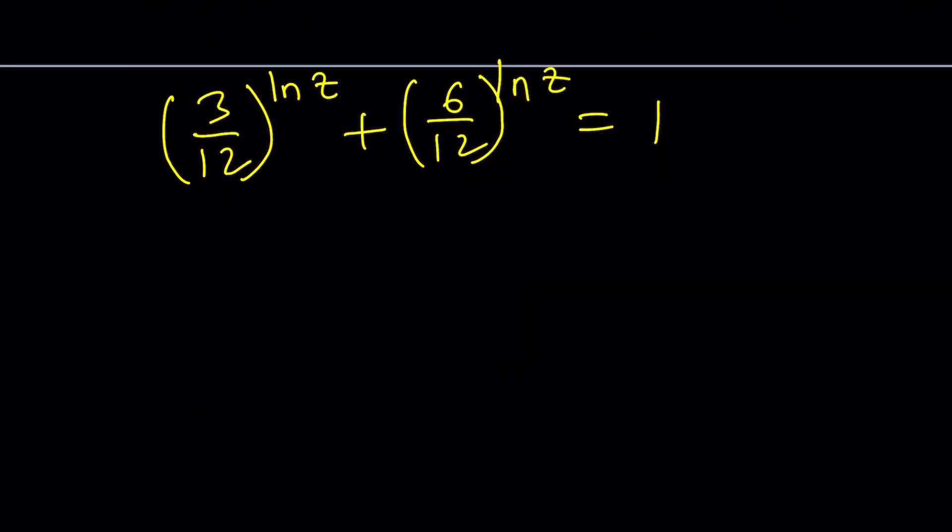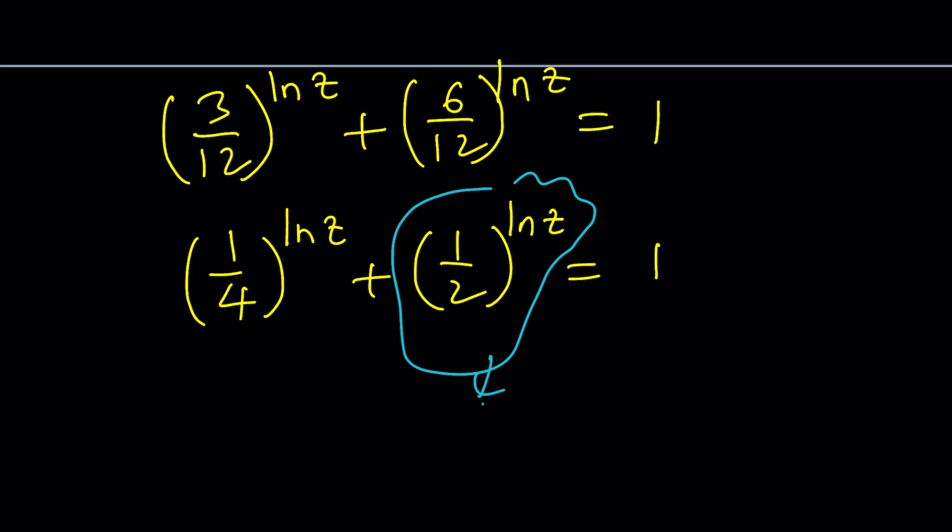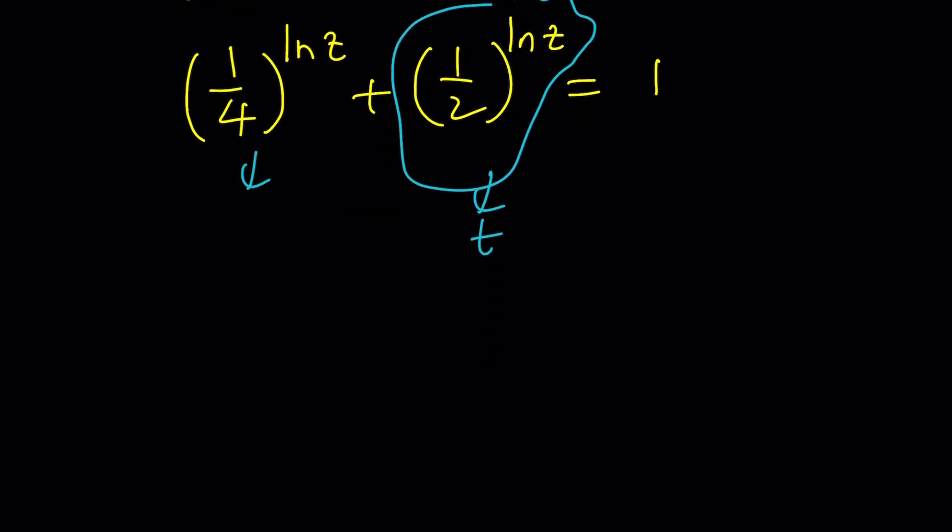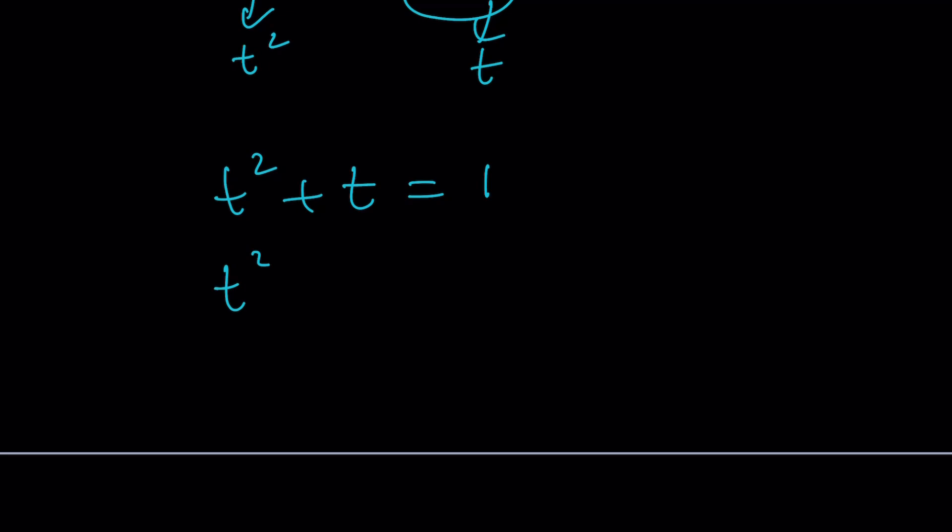Simplify this a little bit because it's going to simplify a great deal. This is 1/4 and this is 1/2. If I call this, and substitution is awesome, I'm going to call this t. And this will become t squared because 1/2 squared is 1/4. So we get t squared plus t equals 1. So t squared plus t minus 1 equals 0. From here, t equals negative b plus minus the square root of b squared minus 4ac. That's square root 5. Golden ratio again, right? The infamous golden ratio.